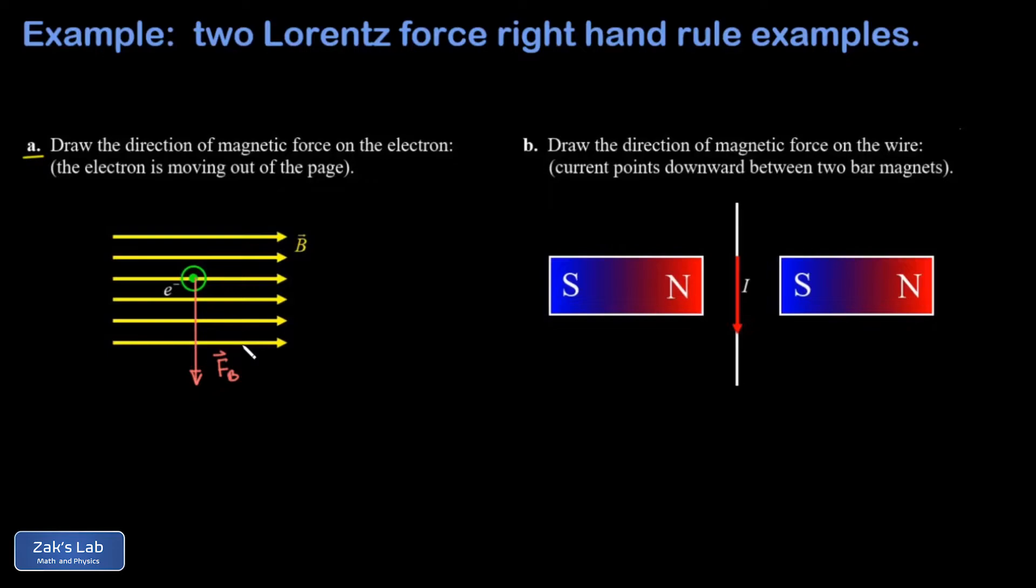The next problem is slightly more complicated because first we have to figure out which direction is the magnetic field pointing at the location of this wire where there's a current flowing downward. And we remember that magnetic field lines flow away from the north pole of a permanent magnet and toward the south pole.